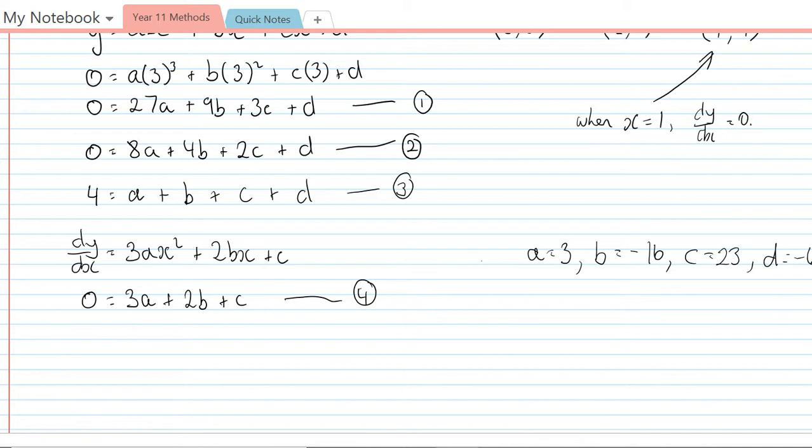Based on that I now can find out what the equation of the curve is, because just subbing them into the general form we get y = ax³ so that's 3x³, plus bx² so that's minus 16x², plus cx so that's plus 23x, and then plus d which is minus 6. And so that is the equation of the curve.